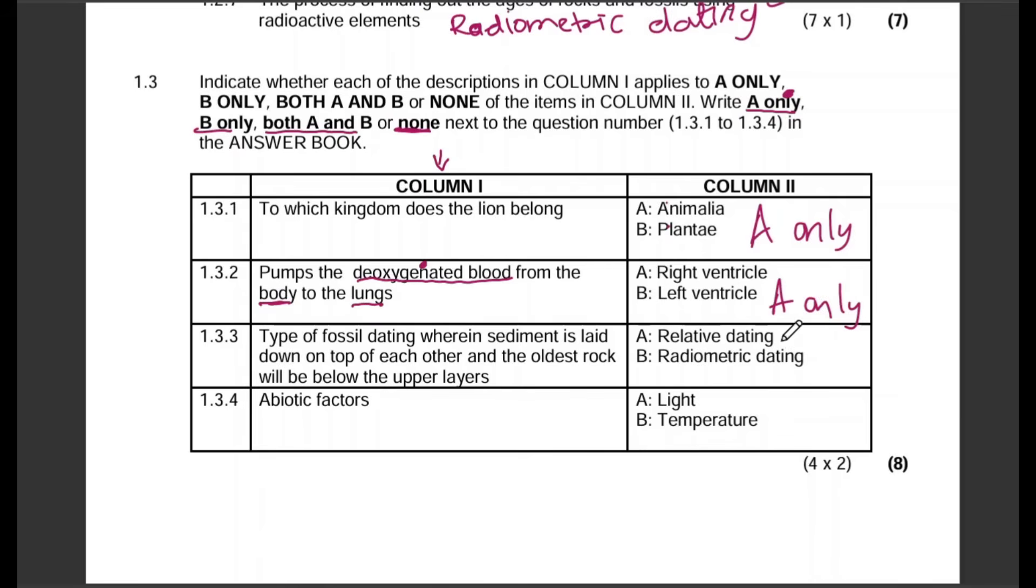Question 1.3.4: Abiotic factors, light and temperature. Both of these are abiotic factors, so the answer is both A and B. This is us following the instructions for this particular question. If you write A comma B, or A dash B, or A slash B, all of these are incorrect. Let's follow instructions. This is how we are supposed to answer.